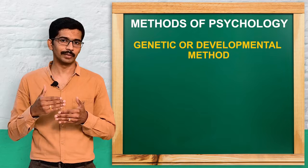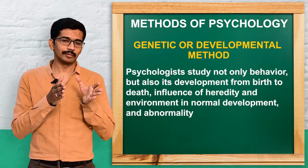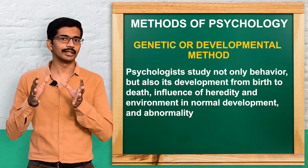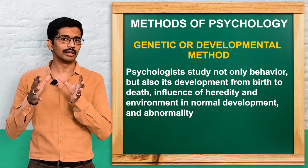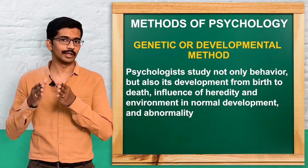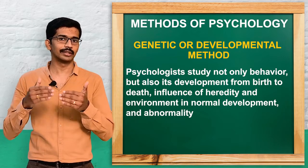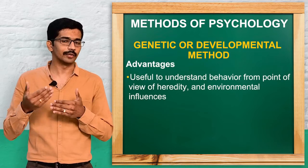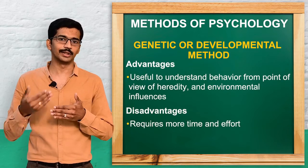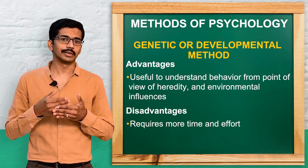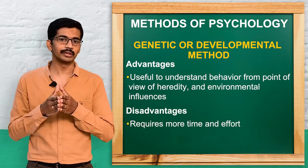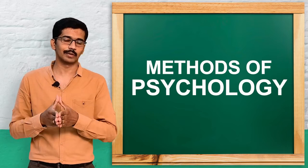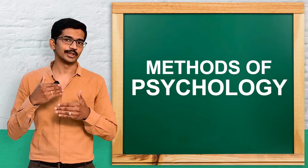The last method is the genetic method or developmental method. Here, information is collected from each developmental period from birth to death. We assess the psychological growth and development of the person, and the expected growth and development can be evaluated by this method — that is its main advantage. The disadvantage is that it is a time-consuming method. We hope you understood the methods of psychology. Thank you for watching.